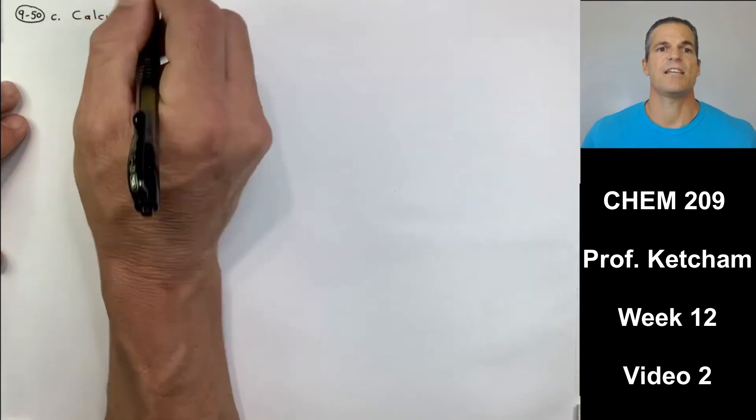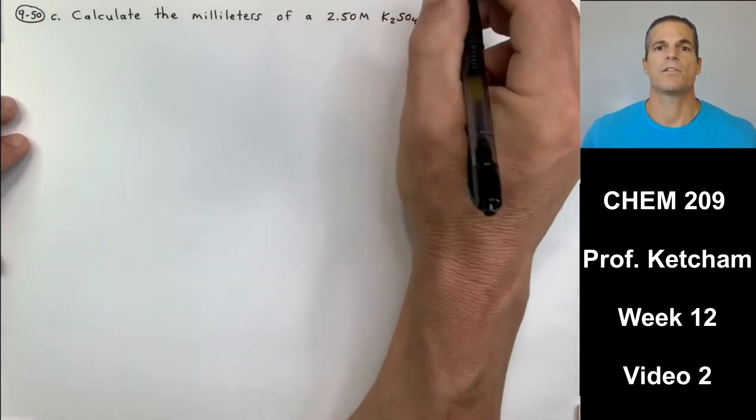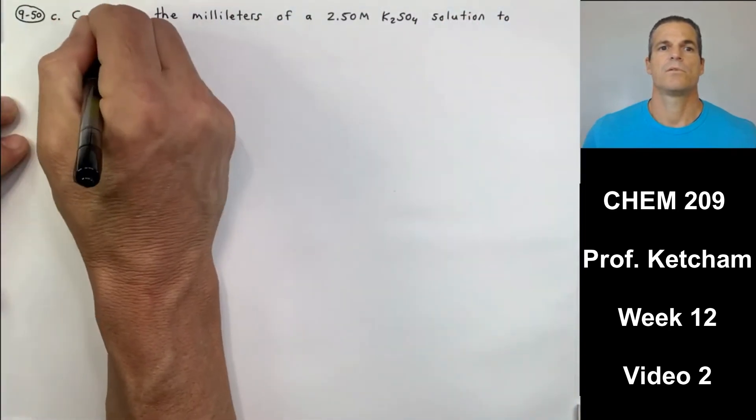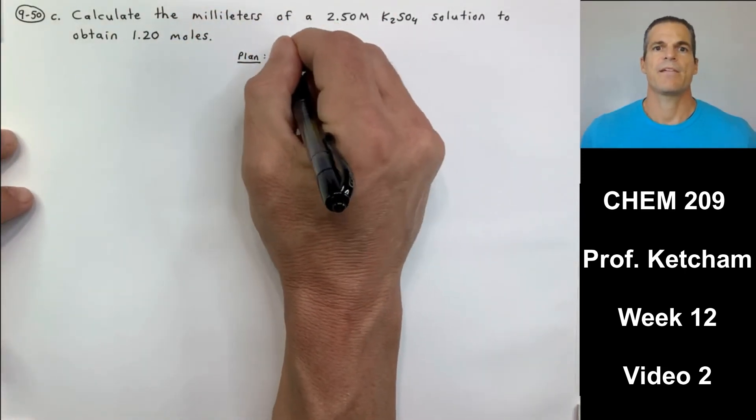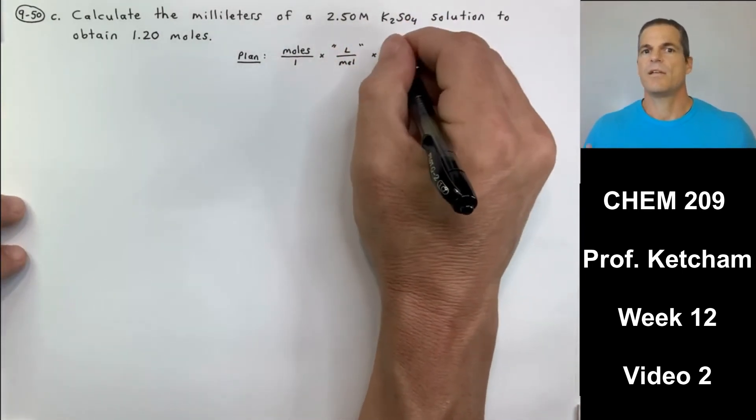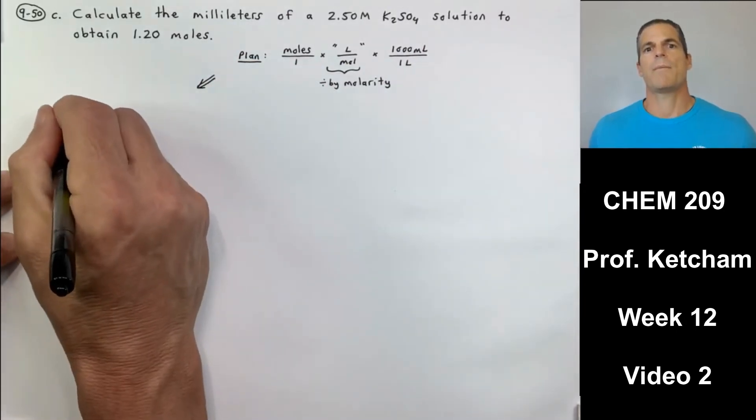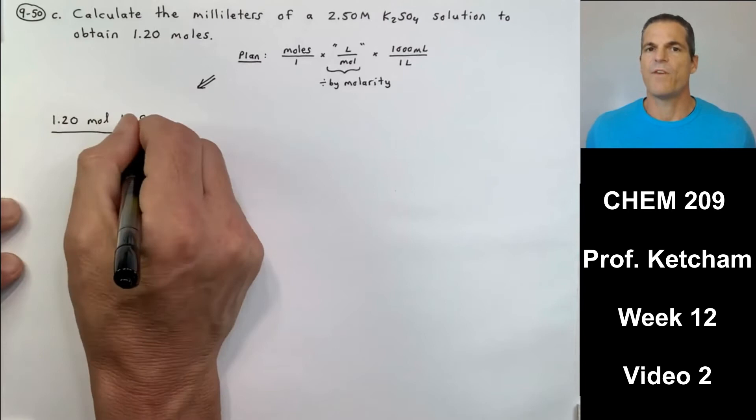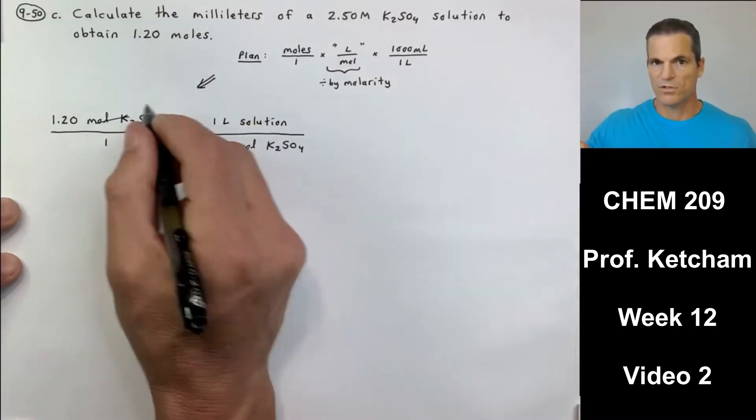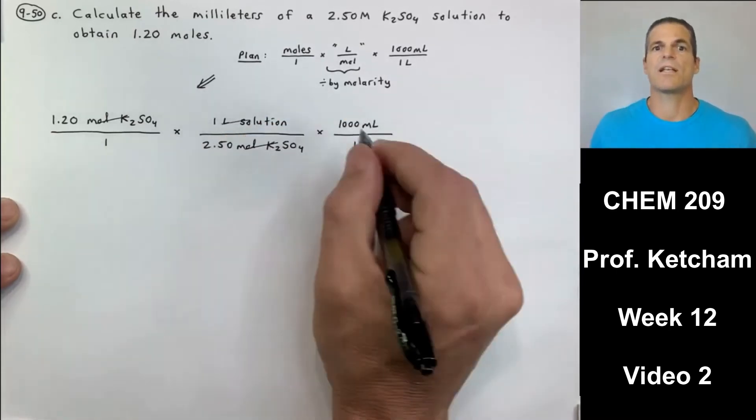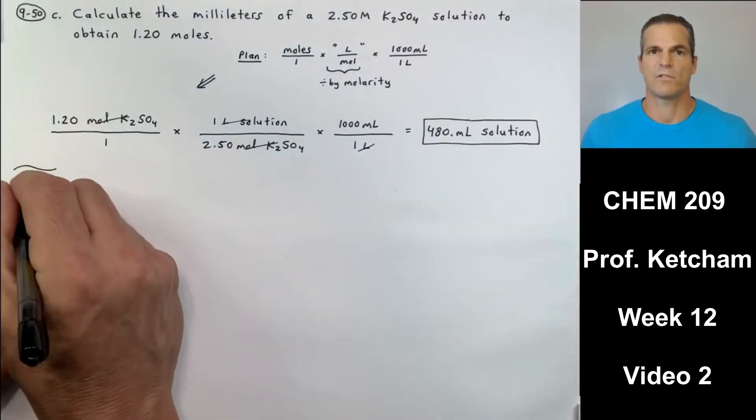Next page of our notes here, 50C. It says, calculate the milliliters of a 2.50 molar K2SO4 solution to obtain 1.20 moles. Well, I know that milliliters I can find if I just have liters and I've got molar. Big M is a mole per liter. So look at the units that are built in here and then situate them. So I've got moles. If I put that over one and divide by the molarity and then multiply by a thousand milliliters over a liter, I end up with milliliters. Follow the units. So 1.20 moles of K2SO4 times 2.50 moles of K2SO4 on the bottom, one liter on top of solution. That puts me in liters of solution. The next step is for every one liter, there's a thousand milliliters. Now I'm in 480 milliliters of solution.